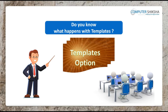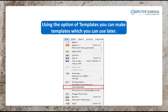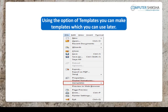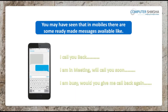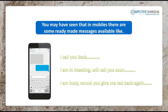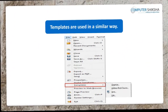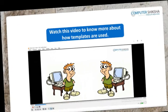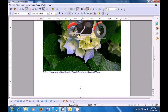Let us now learn about templates. Using the option of templates, you can make templates which you can paste as a prepared template in your document. You may have seen that in mobiles there are some ready-made messages available like 'I am in a meeting' or 'I will call you back' — you can send these without having to type them. Templates are used in a similar way on a writer page. Just like in a mobile you have some predefined templates with messages, you can save them and then paste them where you want.